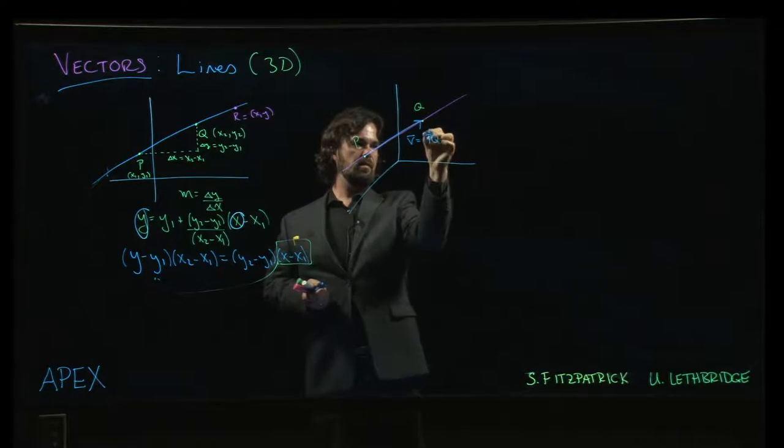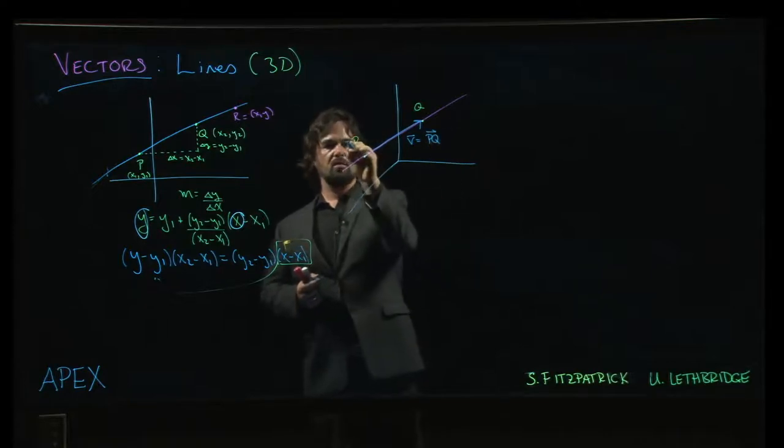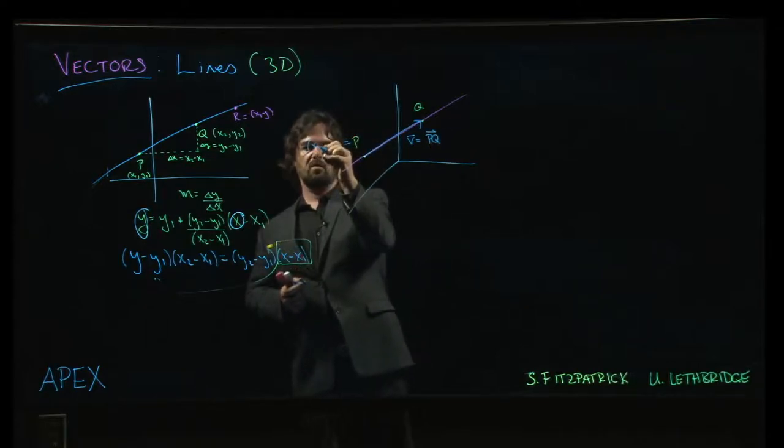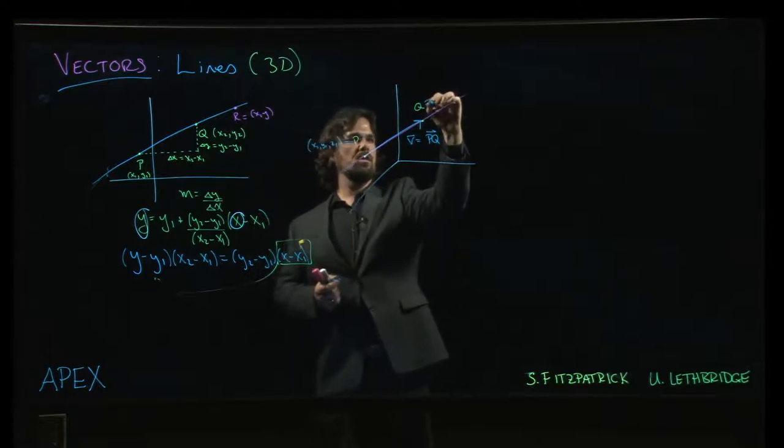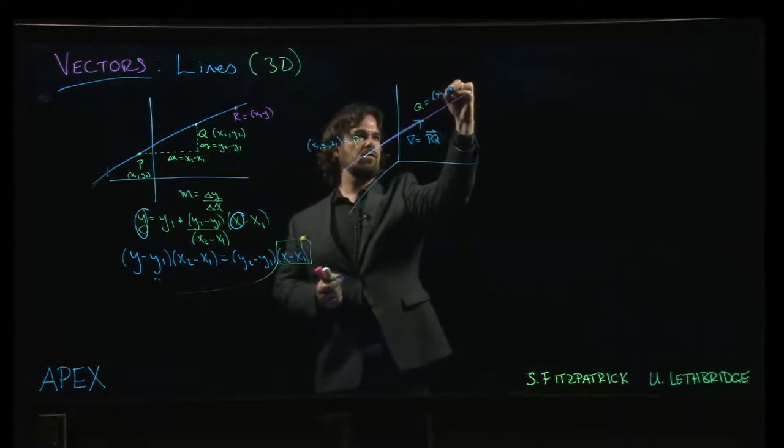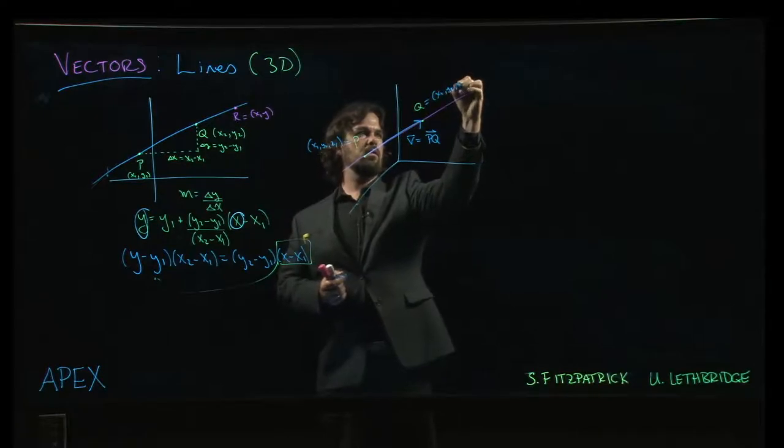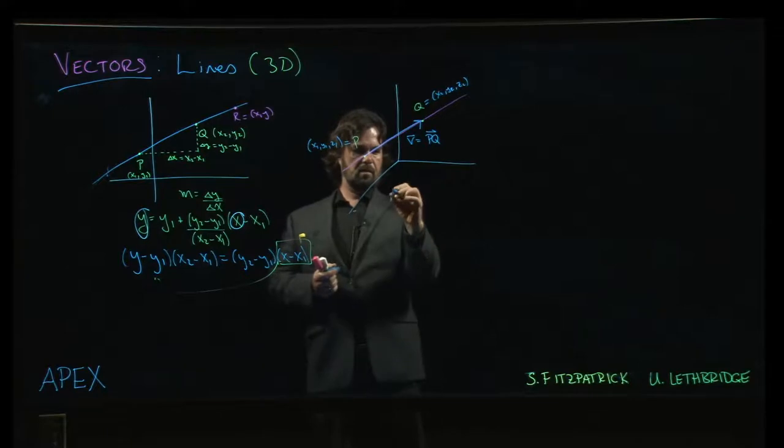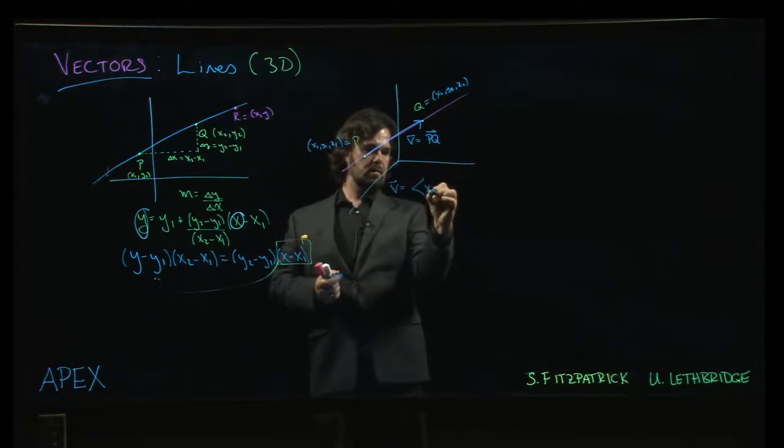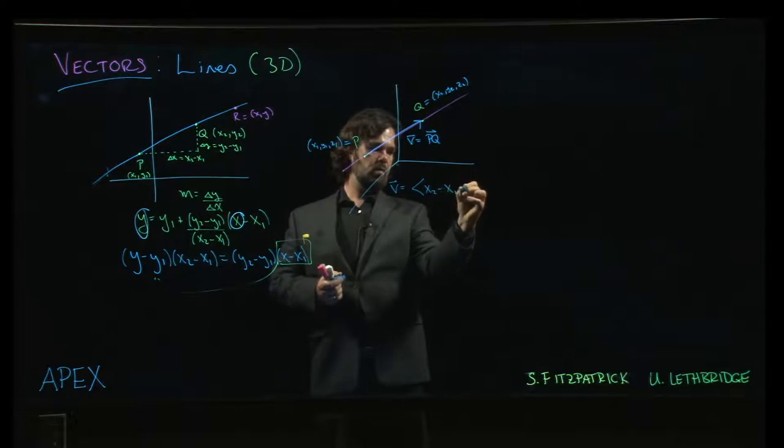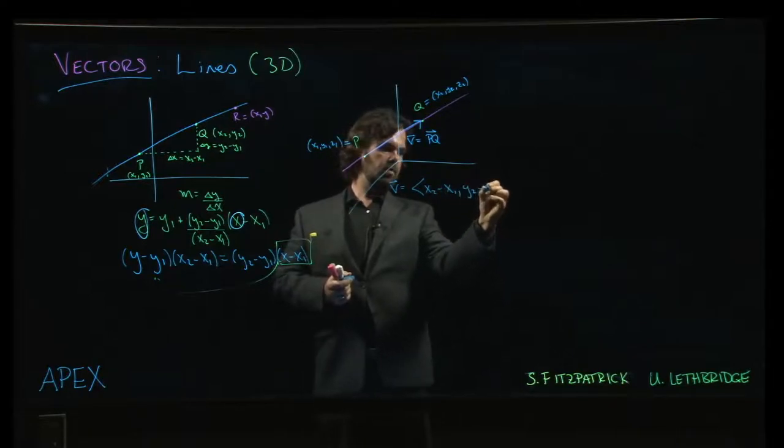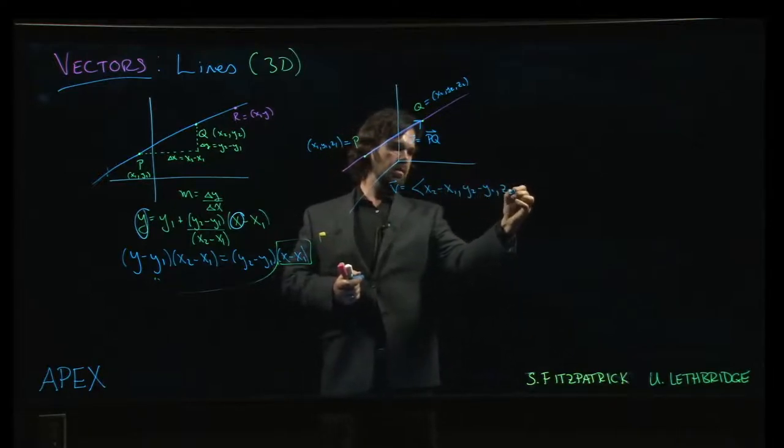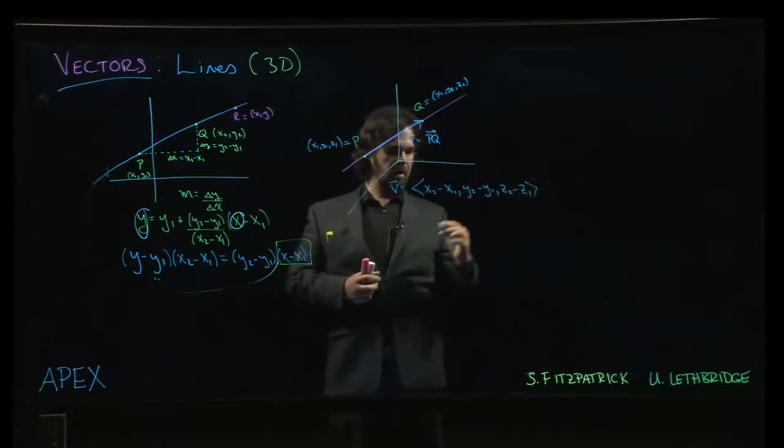So, v is going to be the vector from p to q. So, if p is, let's say, x1, y1, z1, q is x2, y2, z2, then v is going to be this vector, x2 minus x1, y2 minus y1, z2 minus z1.